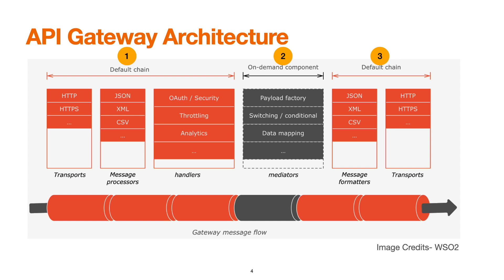It then applies security policies such as rate limiting and collects statistics via handlers. The mediators then act upon the API payload based on the mediation logic developed. The message is then formatted to a pre-configured format accepted by the backend, which is JSON, XML, or CSV, and then sent to the backend service.